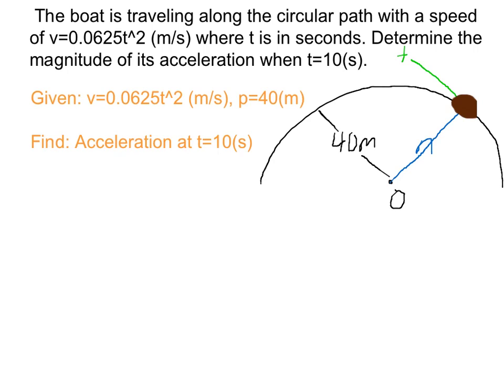Here's an example problem. The boat is traveling along the circular path. Here's my lovely boat with the speed of v equals 0.0625 t squared in meters per second, where t is in seconds. Determine the magnitude of its acceleration when t equals 10 seconds. Given: we have v as a function of time, and rho is 40 meters. Find acceleration at t equals 10 seconds.